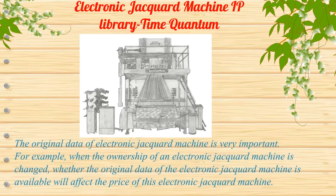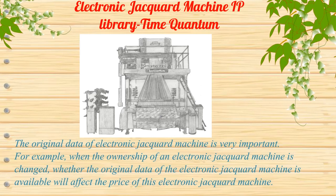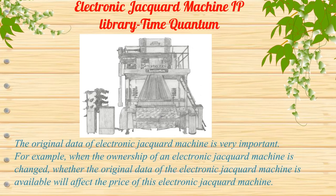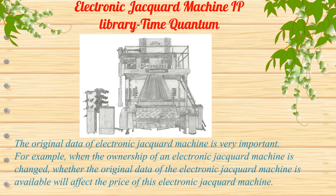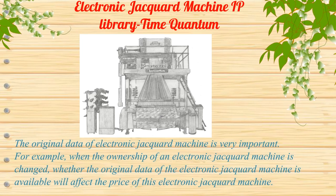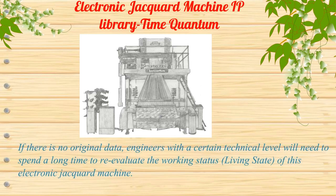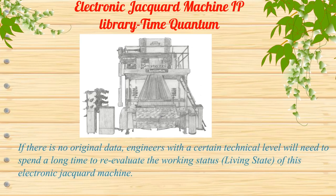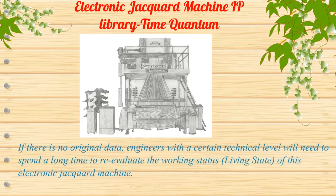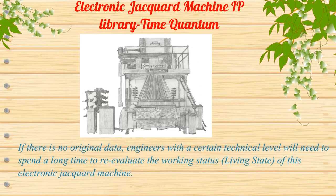The original data of the electronic jacquard machine is very important. For example, when the ownership of an electronic jacquard machine is changed, whether the original data is available will affect the price of the machine. If there is no original data, engineers with a certain technical level will need to spend a long time to re-evaluate the working status and living state of this electronic jacquard machine.